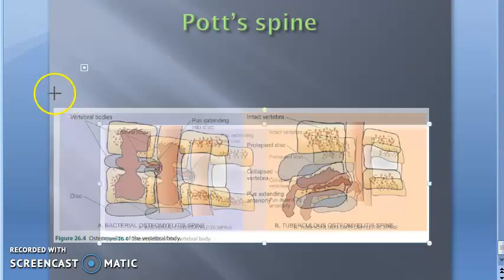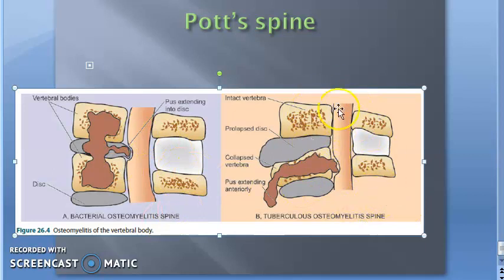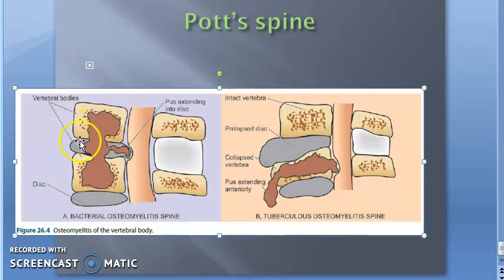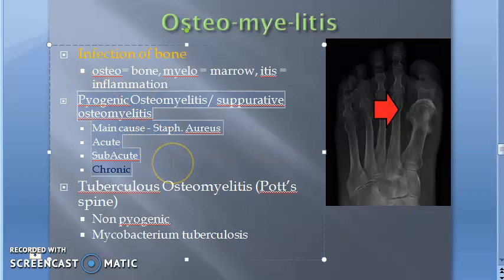We need to look at Pott's spine. This image is not Pott's spine — this is bacterial osteomyelitis of the spine. And this one is tuberculosis osteomyelitis of the spine — this is called Pott's spine or Pott's disease when it affects the vertebral column. The difference: one is bacterial (non-tuberculosis) and the other is tuberculosis.